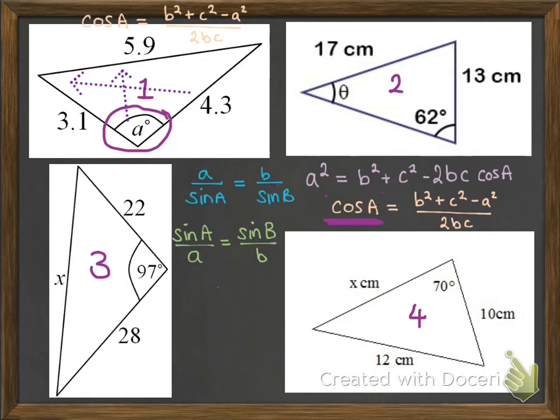All right, number two. Look for your matching pairs. This time we have got matching pairs. Each of those angles does have the side opposite it. We're working out an angle. Now since we have matching pairs, we will be using one of the sine rules. And because we're working out an angle, that's this one here with the sine A at the top. So we'll pop that onto that question there.